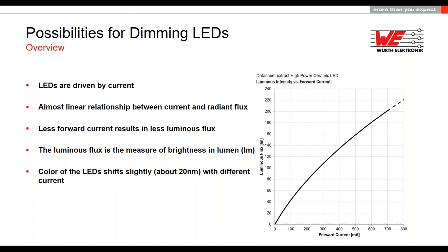The color of an LED depends on the current flowing through it. If the absolute current through the LED of a certain color changes, the wavelength of that color also changes slightly, up to about 20 nanometers. This doesn't mean that a blue LED turns red, of course, but it can get a darker blue, for example.